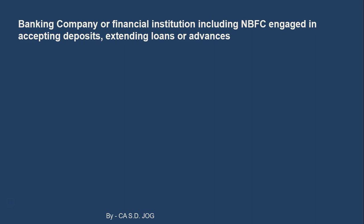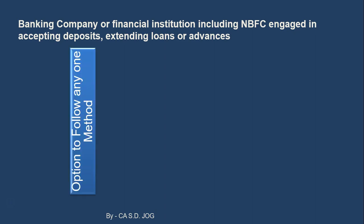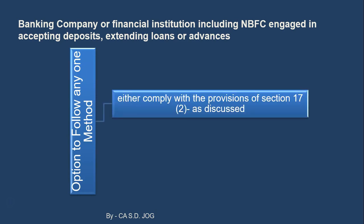They have an option instead of going for the detailed calculation. Option to follow any one method: the first method is to comply with the provisions of section 17 subsection 2, as we have just discussed — the entire calculation for inputs, input services and capital goods on a proportionate basis. They can calculate and add to output tax liability like D1 and D2 in case of inputs and input services and for capital goods.